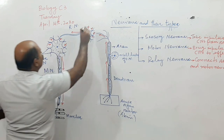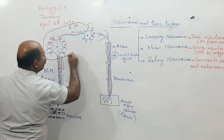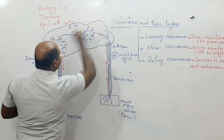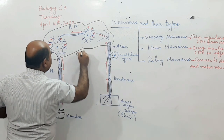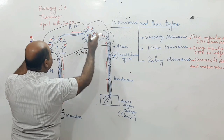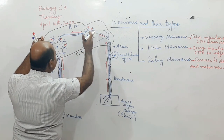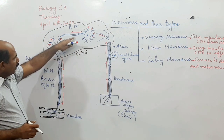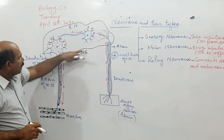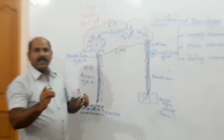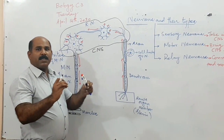One final thing: all these structures in this region are called the CNS — the central nervous system. It can be either the spinal cord or the brain. Messages are coming into and out of the CNS.